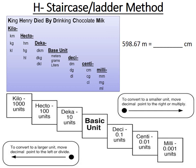Here's a practice problem using the staircase method: convert 598.67 meters to centimeters. The meter is the base unit, and we're traveling down to centimeters — that's two steps down the staircase. Going down means we move the decimal to the right, multiplying by 10 twice. Starting with 598.67, moving two spaces right gives 59,867.0 centimeters. This makes sense — centimeters are smaller, so you can fit many centimeters into a meter. A one-meter stick holds 100 centimeters.